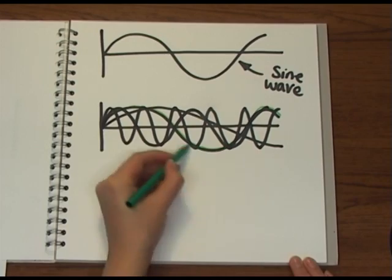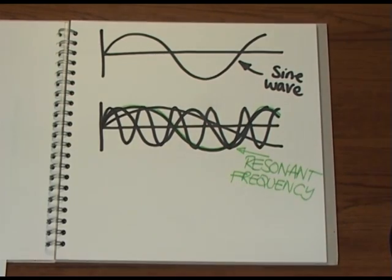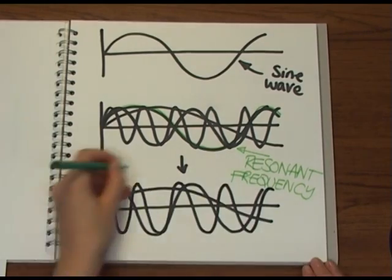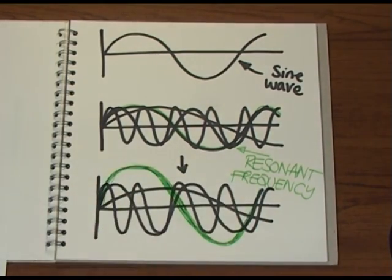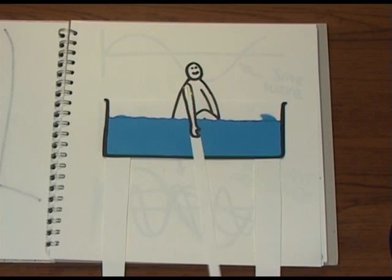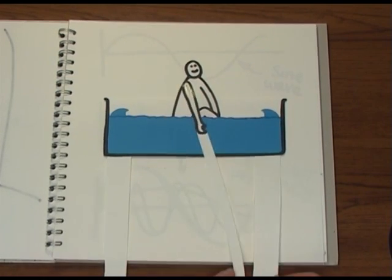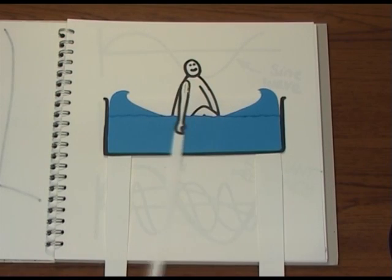If one of the frequencies produced matches the resonant frequency of the mouth and throat, then that frequency will be amplified and will be dominant in what other people hear. Going back to the bath analogy, it's like continuing to move the water at the right speed so that the sloshes of water get bigger and bigger, amplifying them.